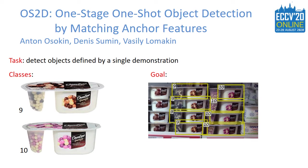In this paper, we target the problem of detecting objects in images in the one-shot setting. Given one image of a class never seen at training, like these two yogurts, we want to detect all instances of this class in another image.